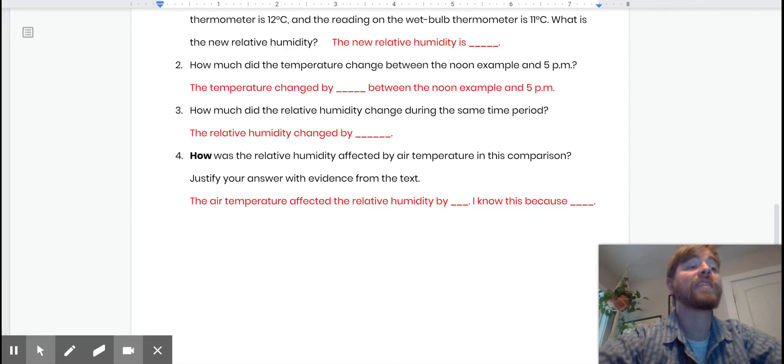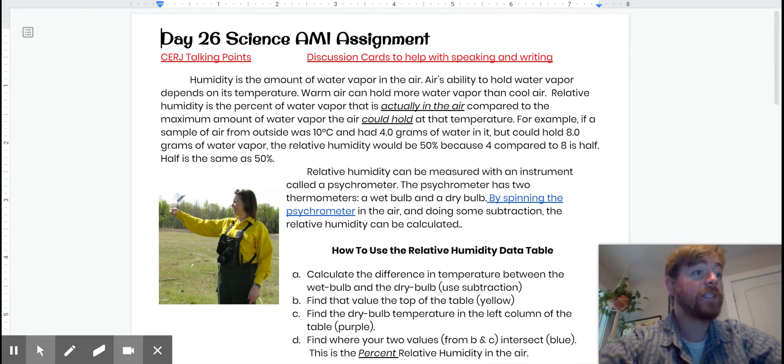And then our last question, how was the relative humidity affected by air temperature in this comparison? Justify your answer with evidence from the text. So let's look at how the humidity changed and how the temperature changed. As the temperature changed, what did that cause the humidity to change? Or how did that cause the humidity to change? Why did it do that? Let's go back to our two paragraphs up here, especially this first paragraph, to get our evidence. I won't give away too much. All right guys, good luck. Let me know if you have any questions. I hope this was helpful.